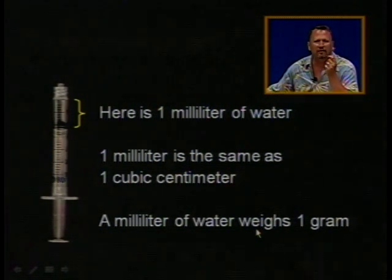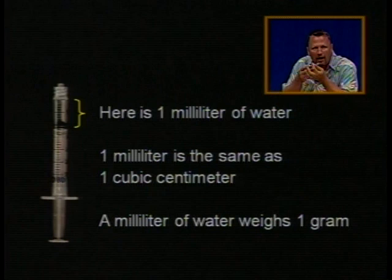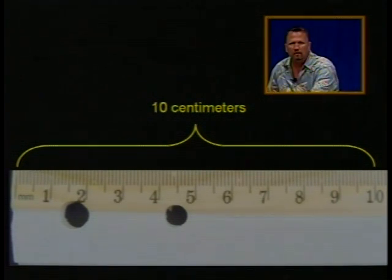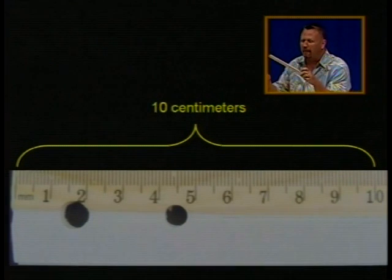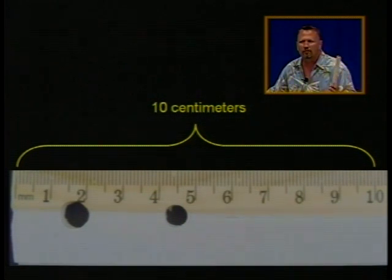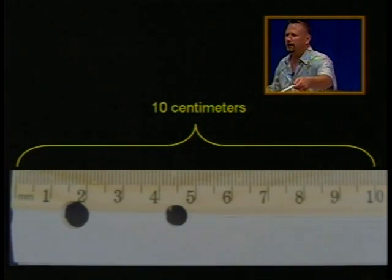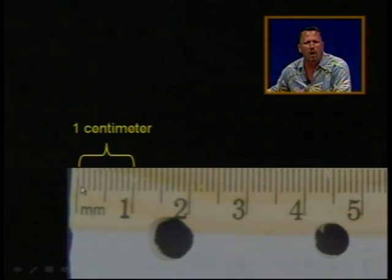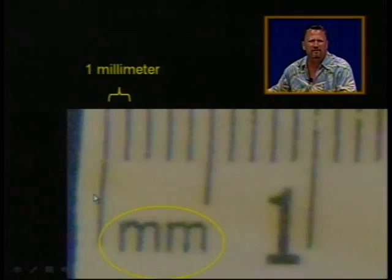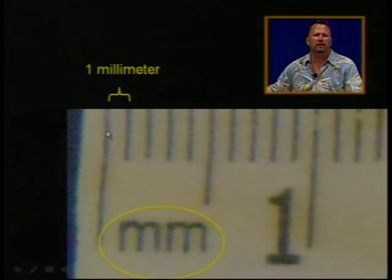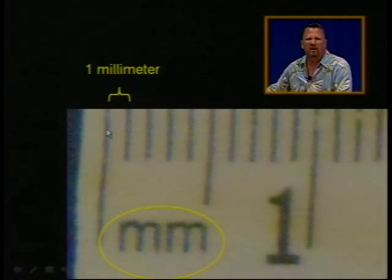And if you took a thousand of these little milliliters — if you did that a thousand times — you would end up with one liter of water. I have a little ruler, about a foot, about 30 centimeters. You'll notice I can see 10 centimeters on there. That's one centimeter — one centimeter is one one-hundredth of a meter. And one millimeter is one thousandth of the meter that I showed you at the beginning.